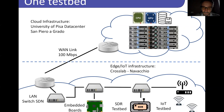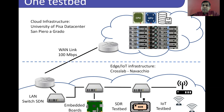At MS&T, there is strength in the Intelligent Systems Center, advanced manufacturing, and transportation areas. If there is room to collaborate, we are of course open to that. Professor Joseph Anastasi is the contact on the Pisa side.